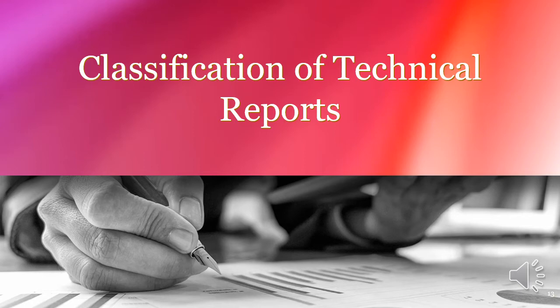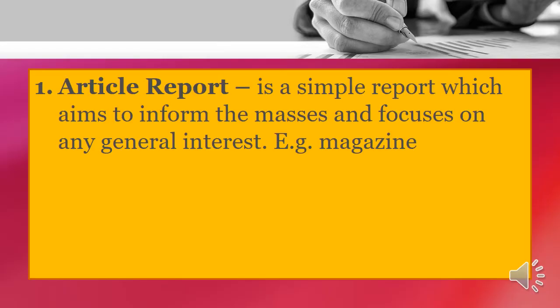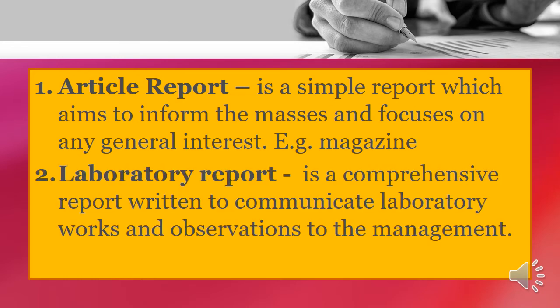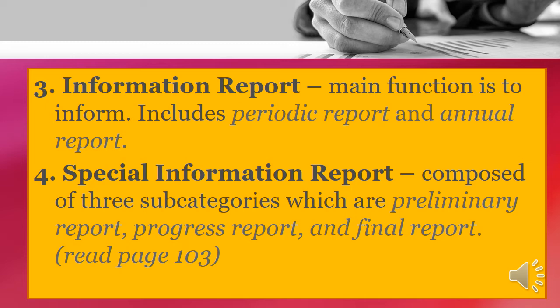There are basic classifications of written reports. First, we have the article report — a simple report that aims to inform the masses and focuses on general interest, like the magazine articles we read on regular days. Then we have the laboratory report — a comprehensive report written to communicate laboratory works and observations to management, focusing on the question: how did we do it? Then we have the information report, whose main function is, as the title suggests, to inform. This report includes periodic and annual reports.